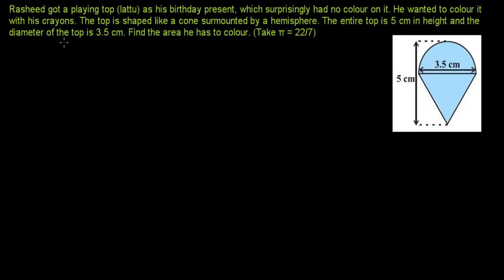The very first question says: Rasid — a boy's name — got a playing top as a birthday present. Here in the figure is a top that swings with the help of a rope. I hope you've played with one in childhood. It's also called Lattu in Hindi. He got this playing object as a birthday present, which surprisingly had no color. He wanted to color it. The top is shaped like a cone surmounted by a hemisphere.